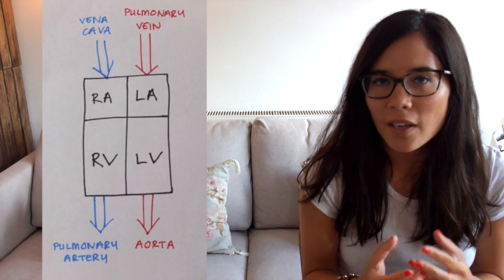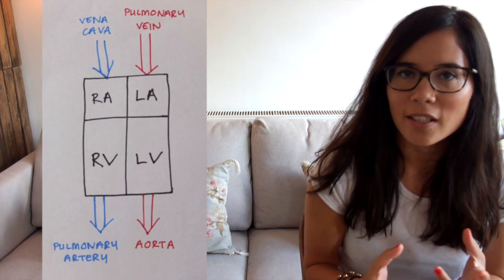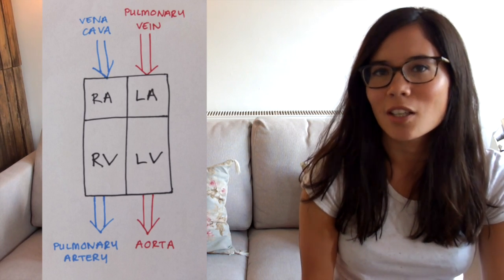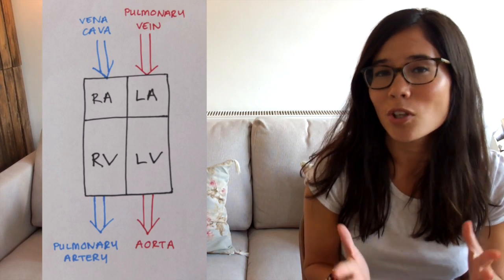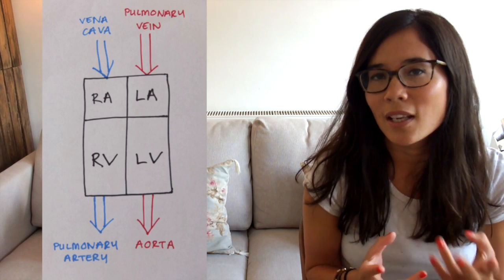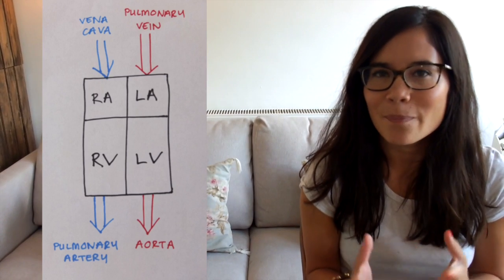Now the heart has four chambers that you need to know. Those are the atrium, left and right, and the ventricles, left and right again. So I've got a diagram here which is really simplified, but I promise it does provide the information you need to know. I find it easier to learn it like a box, because some of the heart diagrams out there are very complicated, but I will show you one later on.